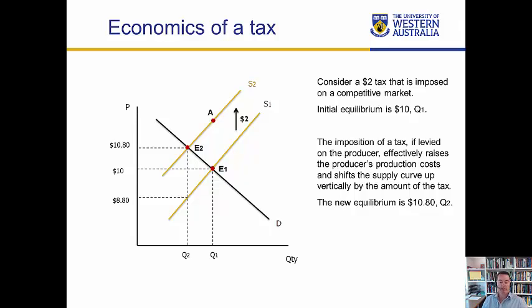What we've got here is a demand-supply diagram, and the initial equilibrium is E1 at a price of $10. We've got the demand curve D and the supply curve S1.